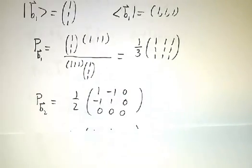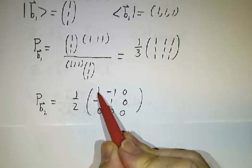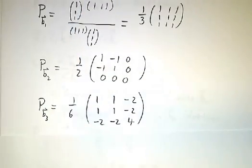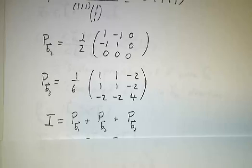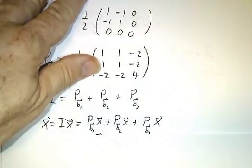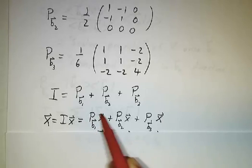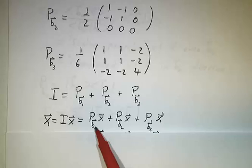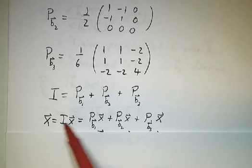Likewise, projecting onto b2 gives an outer product matrix divided by 2, and projecting onto b3 gives another matrix. You may notice that if you add those three projection matrices together, you get the identity. This is no coincidence: any vector equals the piece in the b1 direction, plus the piece in the b2 direction, plus the piece in the b3 direction. So P_b1 + P_b2 + P_b3 must equal the identity matrix.